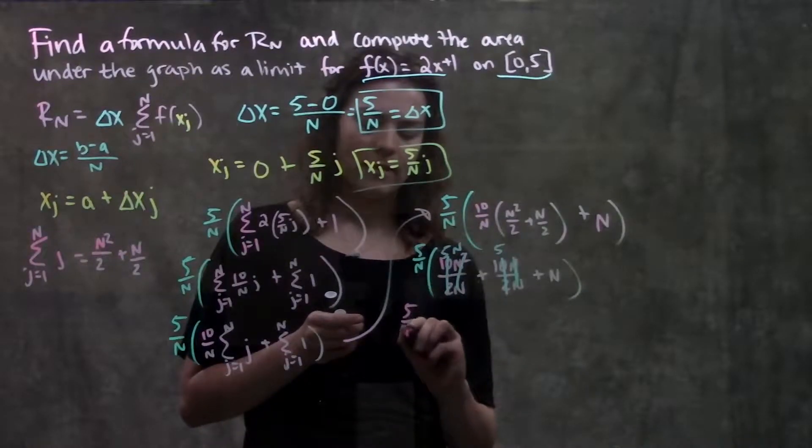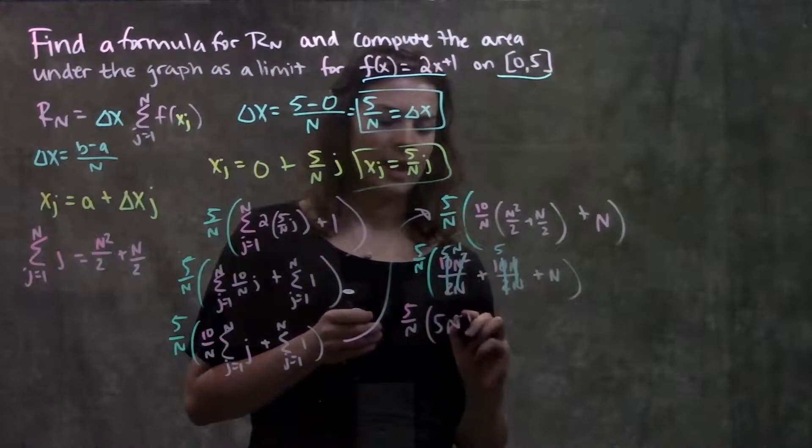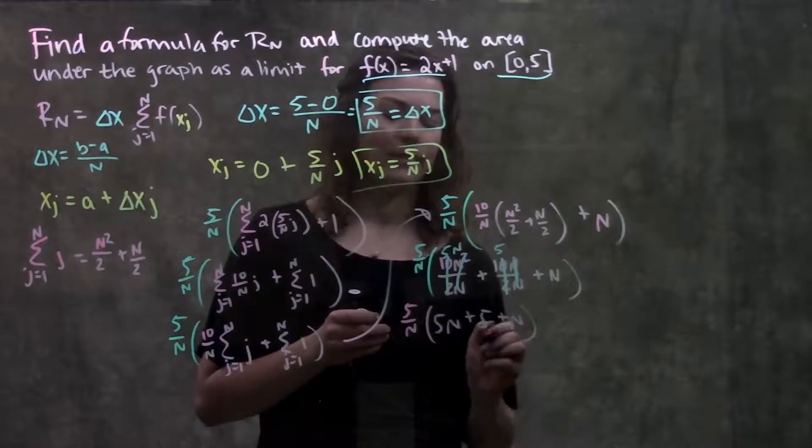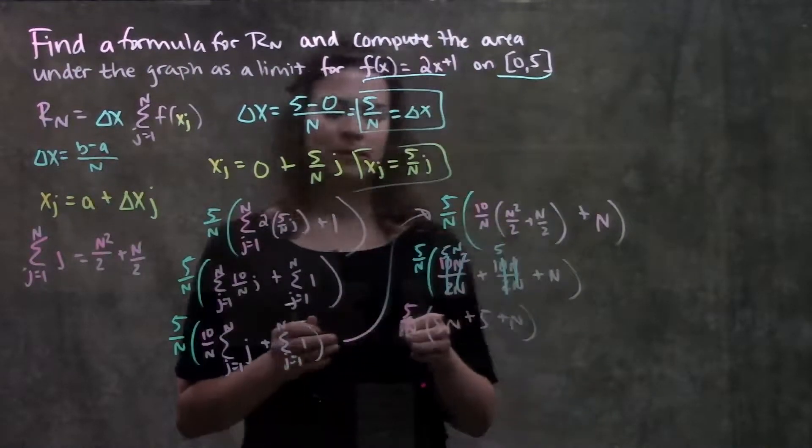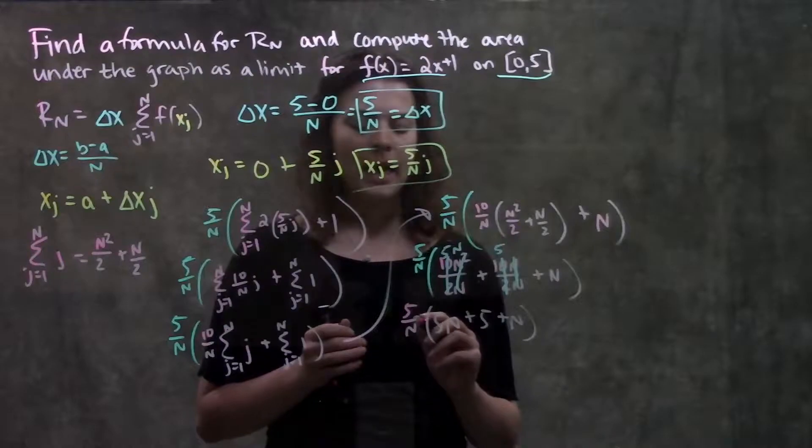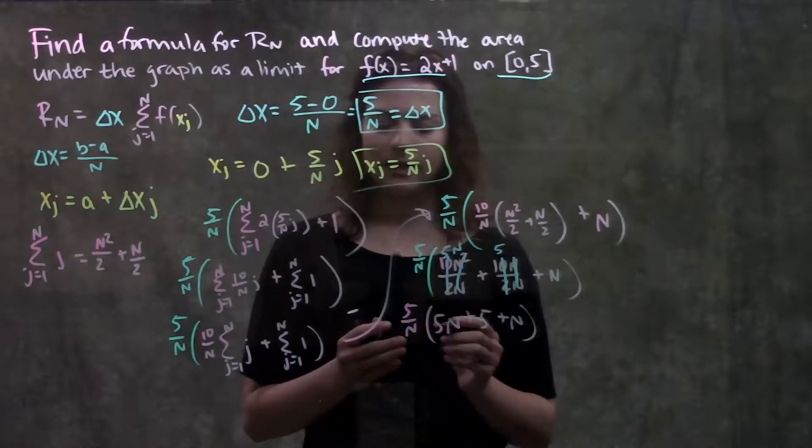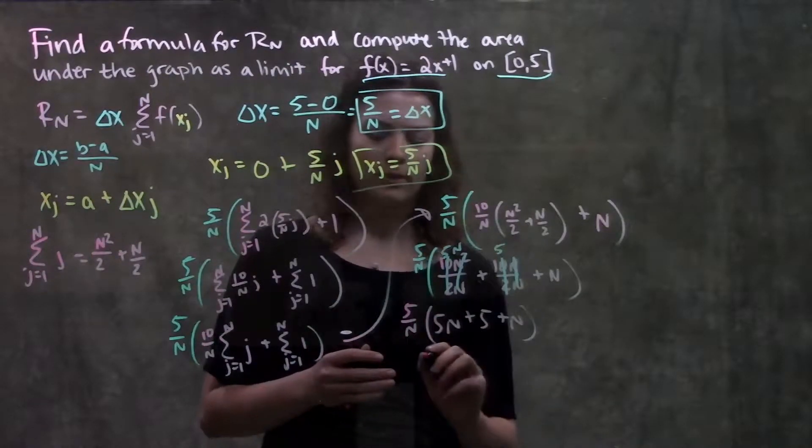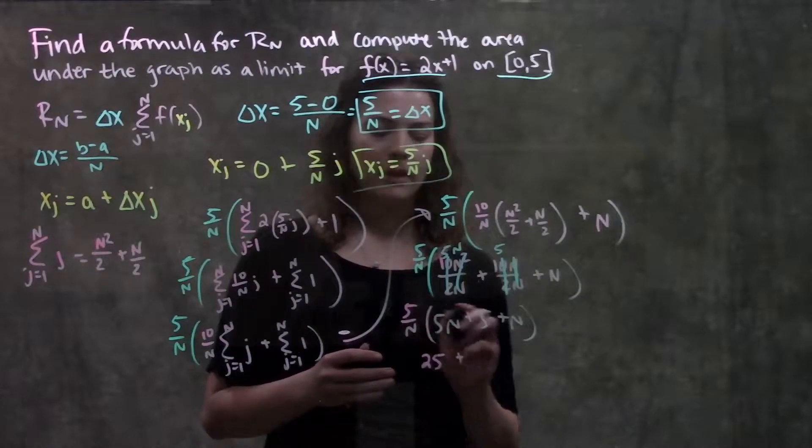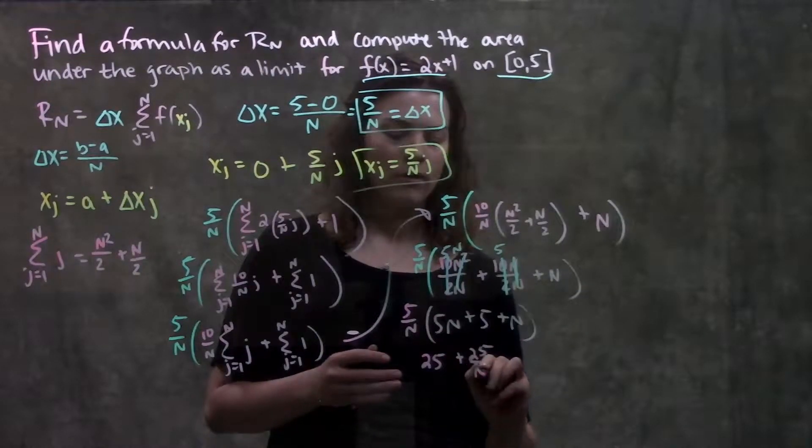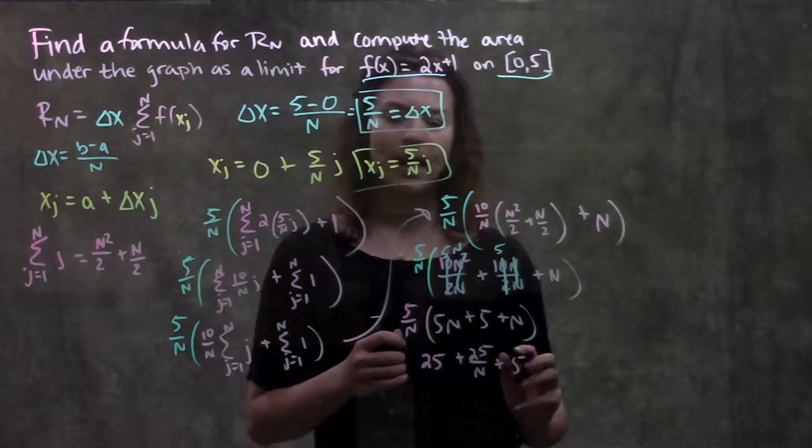So, now I have 5 over n, times 5n plus 5, plus n. Next step, multiply this out, distribute the 5 over n to each of these terms, and I'm left with, I'm going to go ahead and cancel things, the n's will cancel, I'm left with just 25 here, plus 25 over n, plus n's cancel again, just have 5.